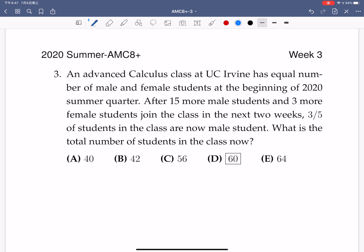Problem number three. An advanced calculus at UC Irvine has equal number of male and female students at the beginning of 2020 summer quarter. After 15 more male students and 3 more female students join the class in the next two weeks, three-fifths of students in the class are now male students. What is the total number of the students now? So let's assume x is the total number of students now.